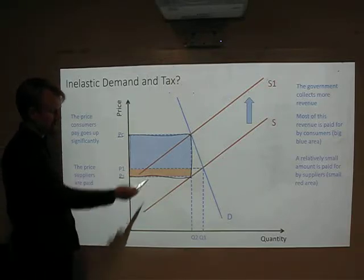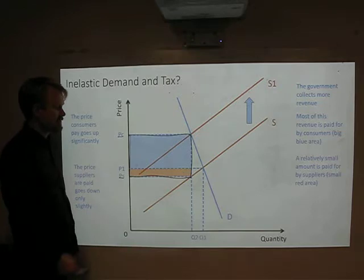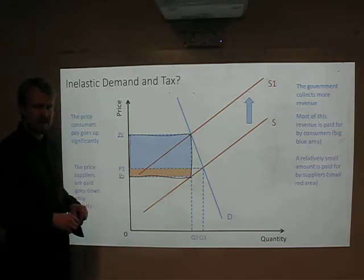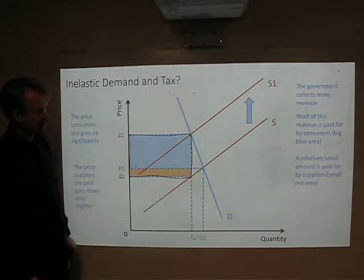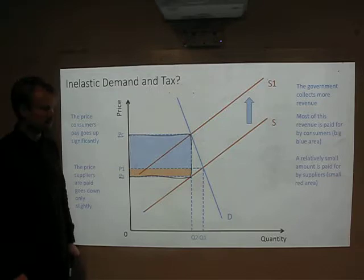The orange area is paid for by the supplier. And as you can see, with an inelastic product, most of that revenue is actually produced and given by the consumer rather than the supplier. And you can see, yeah, a relatively small area is paid for by suppliers.